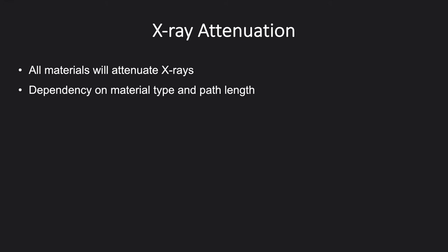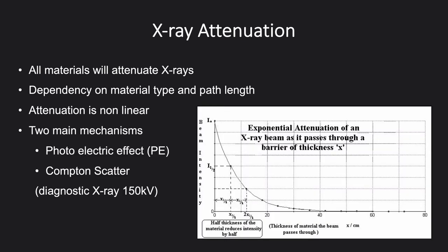The production of an X-ray image is fundamentally due to the interaction of X-rays with matter and how these are attenuated. All materials and objects will attenuate X-rays with varying levels of attenuation. This depends on the material type and the path length that X-rays propagate through. Attenuation is a non-linear, exponential process, as demonstrated in the graph seen on this slide. There are two main mechanisms for X-ray attenuation: the photoelectric effect (PE) and Compton scatter. These are considered in diagnostic X-ray range up to 150 kV that we typically use.